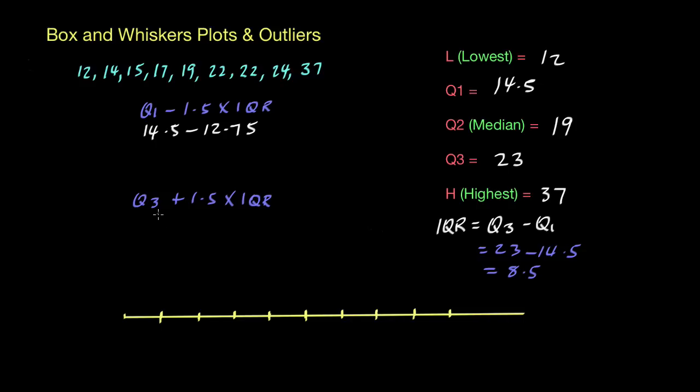Over here this formula is Q3 plus 1.5 times the IQR, so it's 23 plus 12.75. So over here we're going to get 1.75, and down here 35.75.